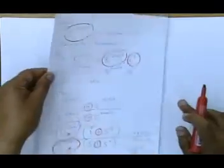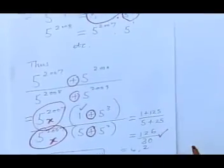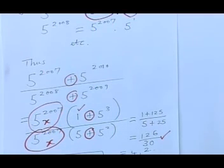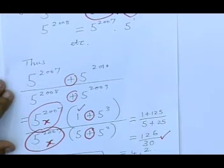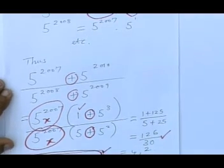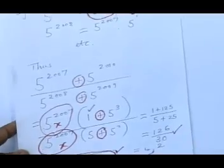Simplifying that fraction, you would get 126 over 30, which is a decimal of 4.2. But notice the question read: go and get the integer closest. That means the nearest integer to that decimal answer will be 4. And many learners lost a mark at that point for not getting the correct answer as 4 and not 4.2.